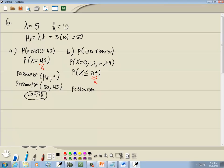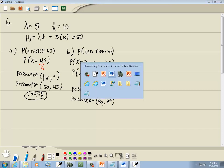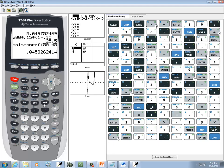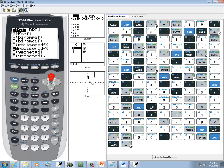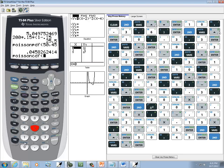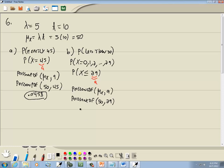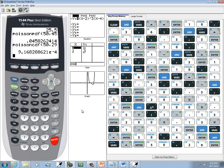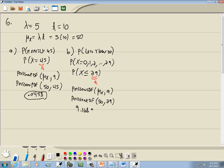So Poisson CDF, mu sub x, comma, a. So we've got Poisson CDF, our mean, which is still 50. That doesn't change for any of these problems. a, which would be 29. So Poisson PDF, I'll do second vars, up arrow to Poisson CDF. And we're putting in 50, comma, 29. And this would be 9.168 E negative 4. Well, this is scientific notation. This means 9.168 times 10 to the negative 4.